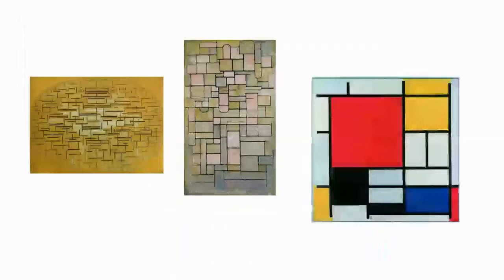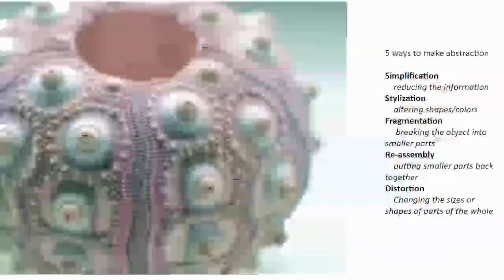Now, we are not intending to make art that is quite as non-objective — meaning it doesn't look like any particular thing — but it's a useful skill and a good process to see. So Mondrian used at least five techniques to make things abstract, and we're going to name these five techniques. There are others probably, but these five will get us where we need to go.